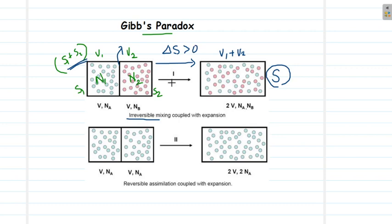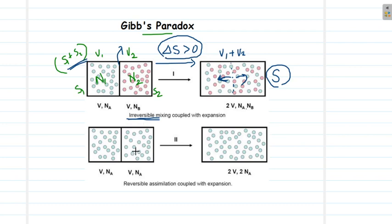This action is irreversible because if we allow different types of gases to mix, we cannot separate them back without doing some work. It is impossible to naturally separate different types of molecules back into separate compartments once mixed — it is irreversible. This kind of mixing of different types of molecules should be associated with a net change in entropy, and delta S should be greater than zero for an irreversible process.